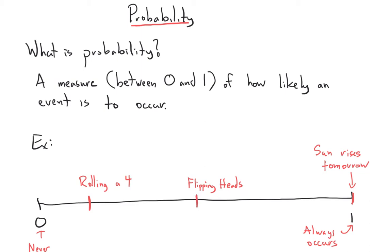So, flipping heads on a coin, if you just flip once and then record if you get heads or tails, the probability of that, it's about half the time heads, half the time tails. So, you'd expect a probability of a half for flipping heads on a coin.